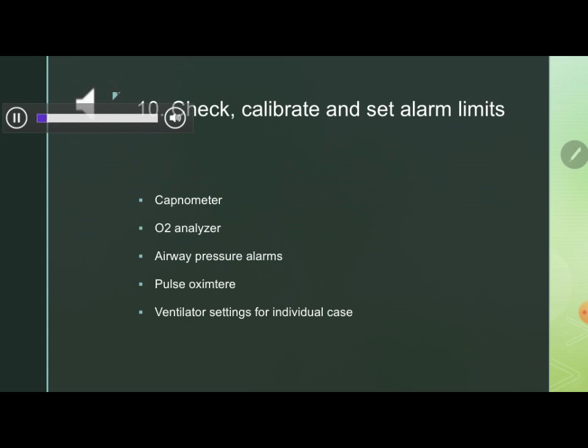Do not forget to individually check and calibrate the capnometer and the oxygen analyzer. Airway pressure alarms should be set daily. The integrity of the pulse oximeter should be checked. Ventilator settings for individual cases should be verified prior to starting, as they will obviously differ for adult and pediatric cases. These are all part and parcel of the anesthesia machine check and should be ensured before starting each case.